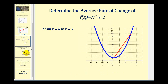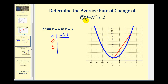Let's determine the average rate of change of the given function from x equals zero to x equals three. The first thing we need to do is determine the coordinates of the points when x is zero and when x is three. Once we have our two points, we can use the slope formula to determine our average rate of change. When x is zero, f(0) equals zero squared plus one, so f(x) equals one. When x is three, f(3) equals three squared plus one, which is ten. We can check that on the graph — here's the point (0, 1) and here's the point (3, 10). So the average rate of change of this function will be the slope of the line containing this segment.